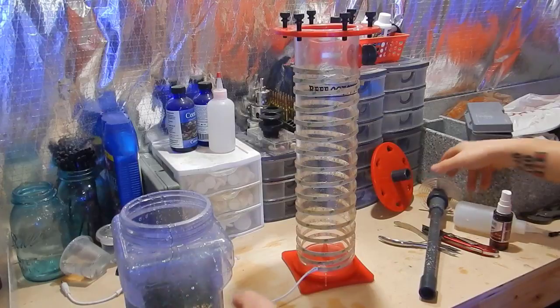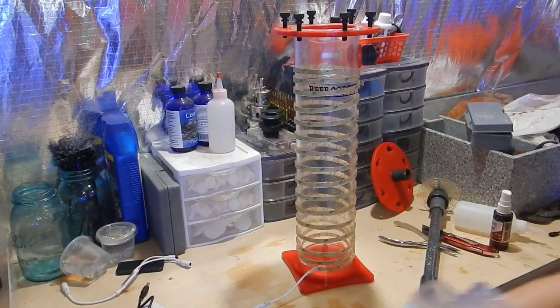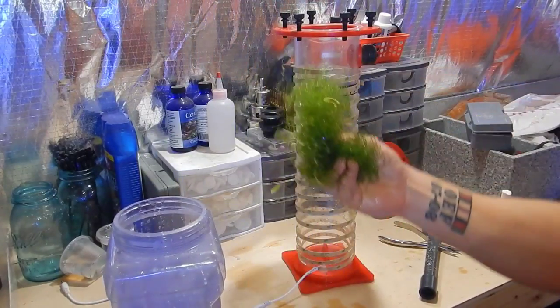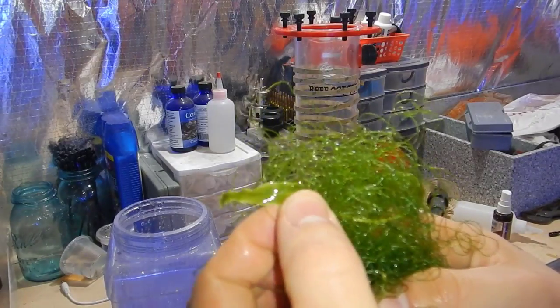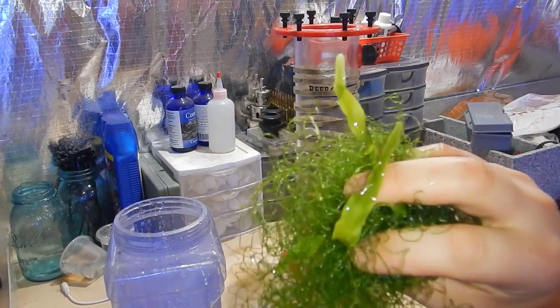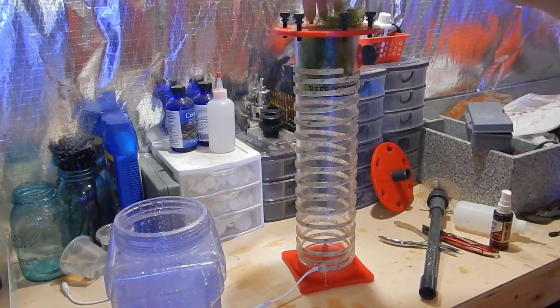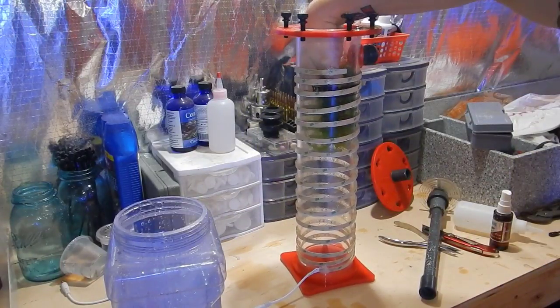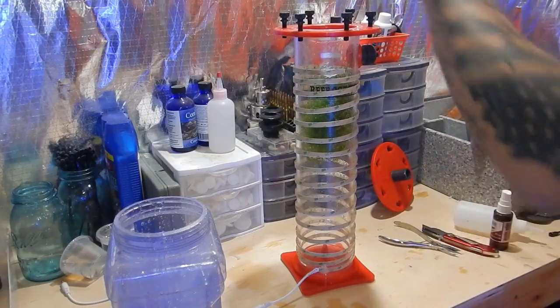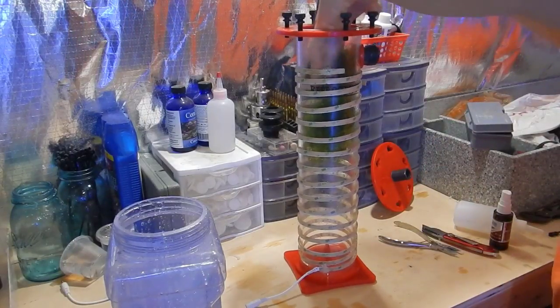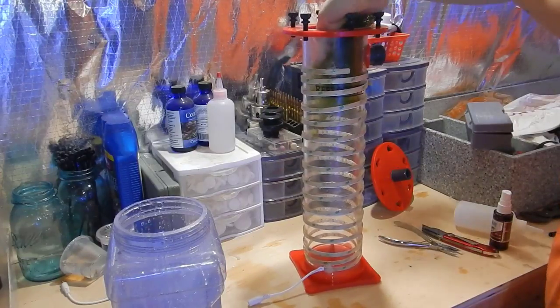Once we have everything put together we're going to go ahead and pull some macro algae out of the refugium. I grabbed some chaeto and a little bit of caulerpa. I put some caulerpa in there because Triton recommends having different types of macro algae besides just chaeto. Just stuff it in there. As you can see it's just a small ball and I actually have to put it down a little bit, push it to the side because I have to slide this tube down past it without getting it caught.